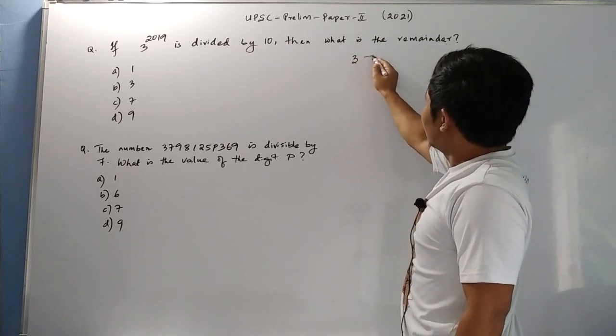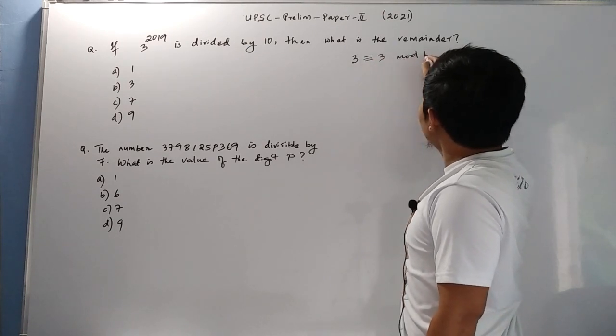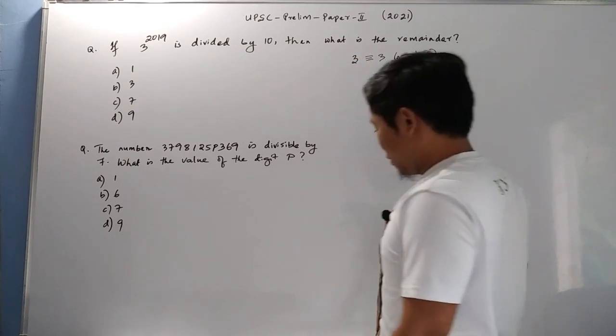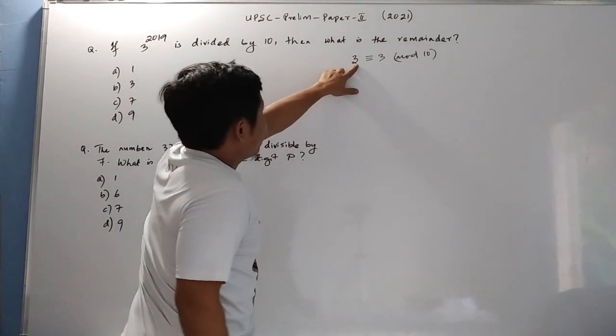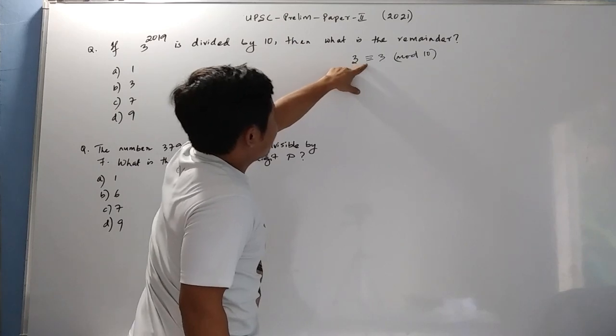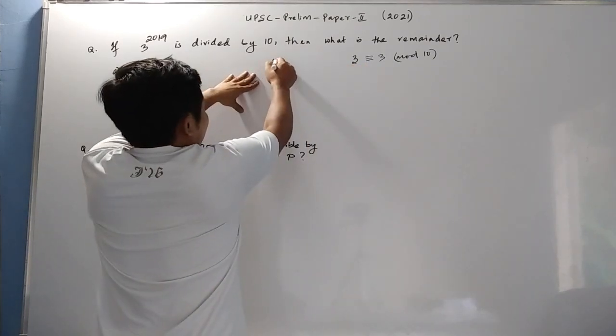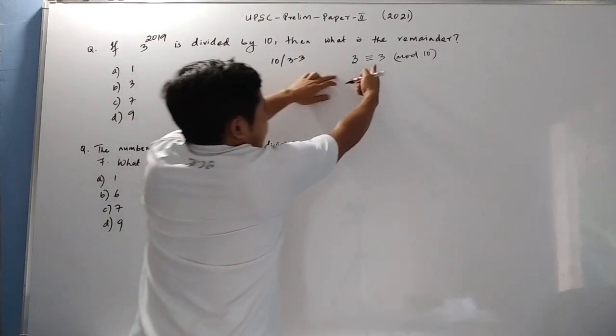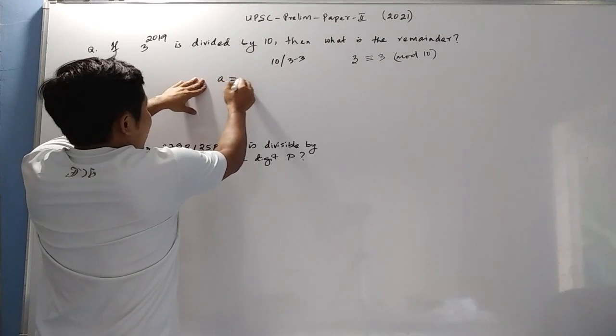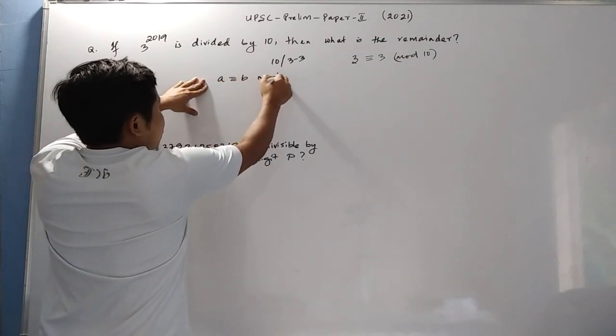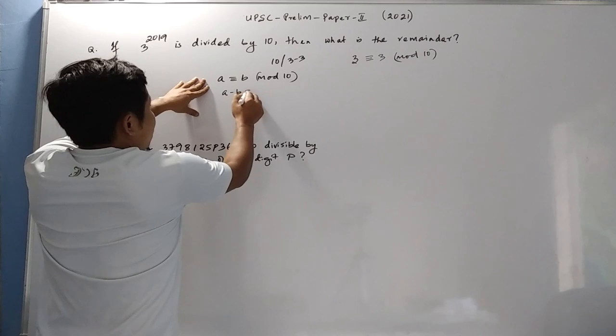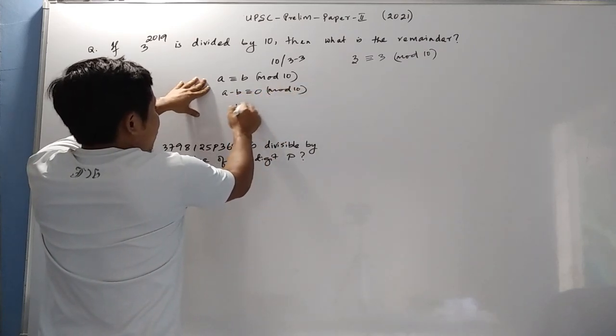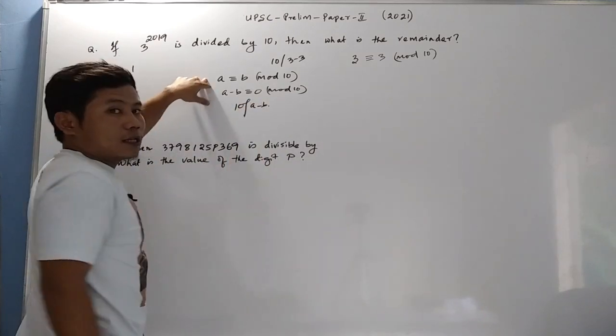3 congruent to 3 mod 10. Don't be scared. This is an easy one. Why? The reason I am writing 3 congruent to 3 mod 10 is that 10 can divide 3 minus 3. When A is congruent to B mod 10, A minus B is congruent to 0 mod 10, which means 10 can divide A minus B.